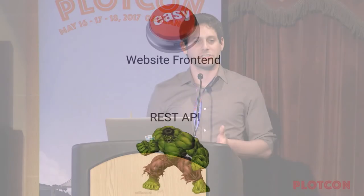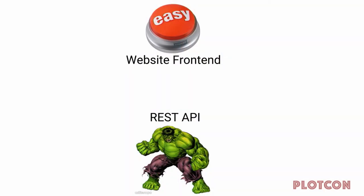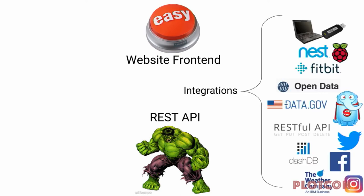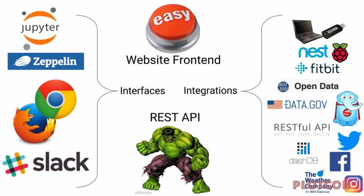At its core, bCharts has two main parts: a website front end where you can click and create your charts, and a REST API back end that lets you do everything the front end does. Then we have the data integrations in the middle. It should be as easy as clicking 'create a Fitbit chart' — bCharts pops up an OAuth dialog, you authorize bCharts to access your Fitbit data, click OK, and without doing anything else you're instantly sent to your chart, which you can share or display. We also have Jupyter and Zeppelin notebook support, a Chrome extension, and a Slack command.